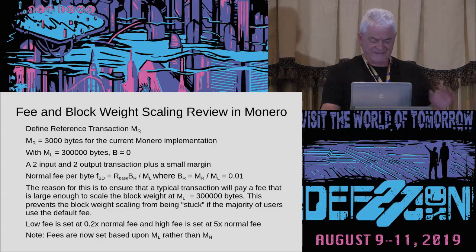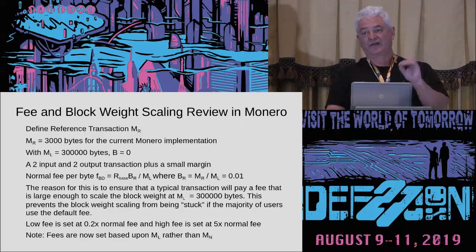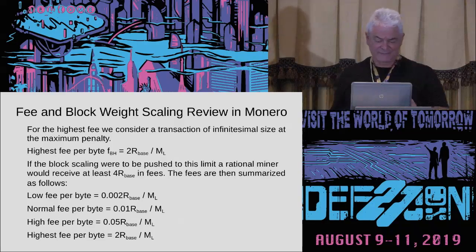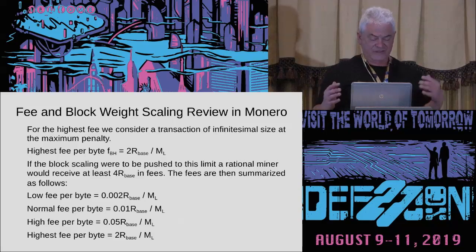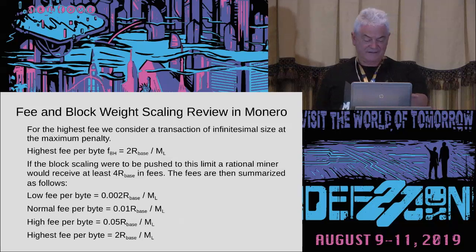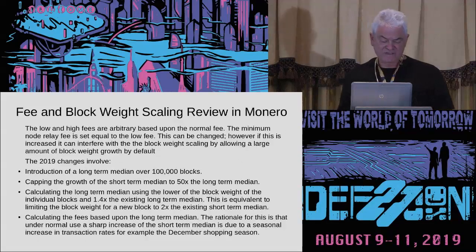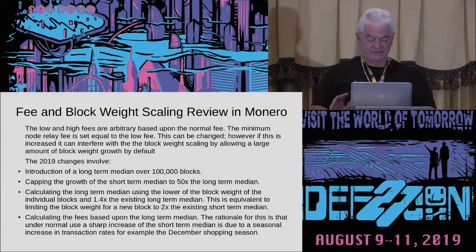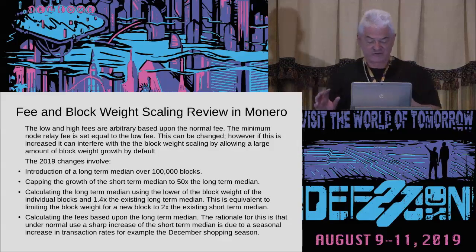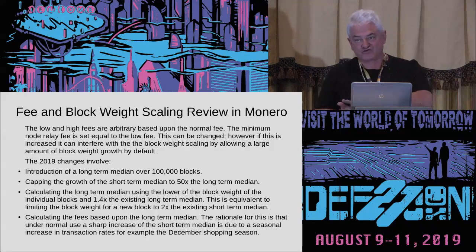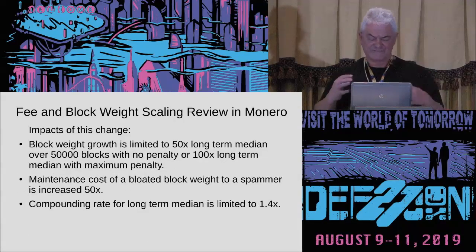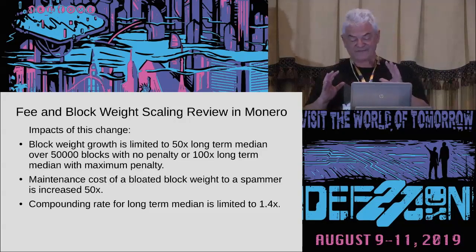A key difference from last year is that fees are now based on the long-term median rather than the short-term median. The high fee per byte — the maximum if you max the whole thing out — is actually twice the entire block reward. The changes introduced were: the long-term median capping the growth of the short-term median at 50x, and the long-term median itself only grows 1.4x, which effectively controls the rate of growth of the block size over time to prevent certain types of attacks.